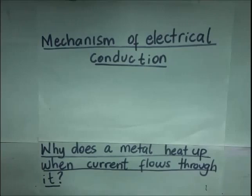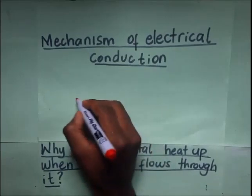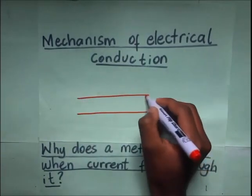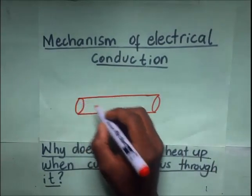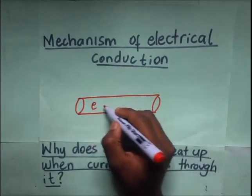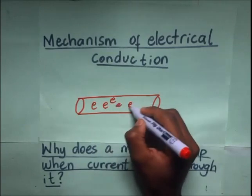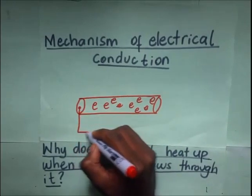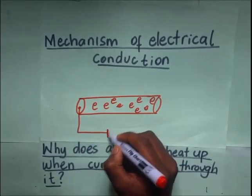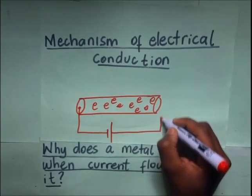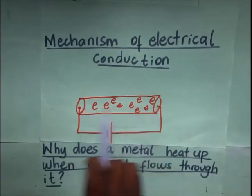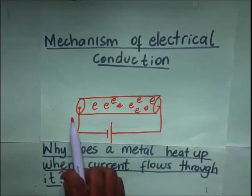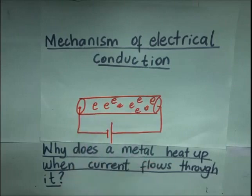How does electric conduction take place? Let's draw a diagram of a conductor — let's say this is a wire. We all know that a wire has free moving electrons in it, electrons that are not required for bonding. If we connect a dry cell across this conductor, then an electric field is going to be set up in it.